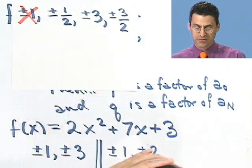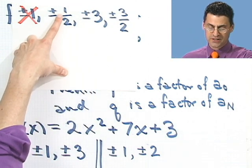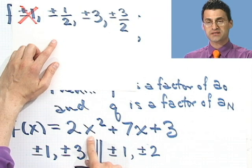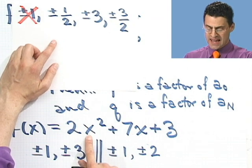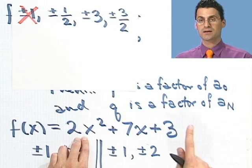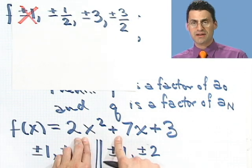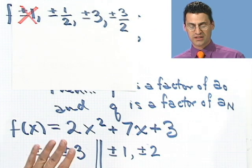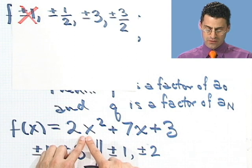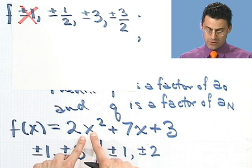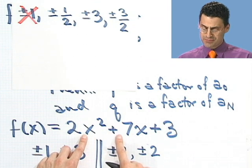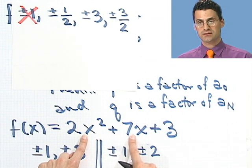What about plus or minus a half? Well, let's try plus a half. If you put in plus a half here, a half squared is a fourth times 2 is a half, so I have a half plus 7 halves plus 3. A half plus 7 halves plus 3 certainly isn't going to combine to give 0, so that's no good. What about minus a half? If I put in minus a half, when I square that, I see a fourth times 2 is a half, so I see a half, then I see minus 7 halves plus 3.